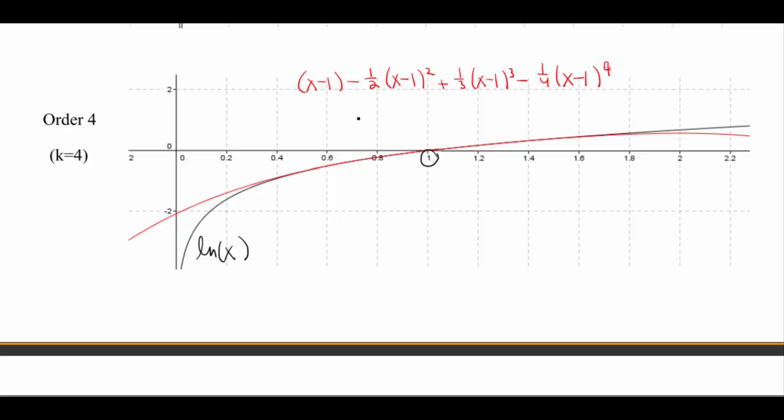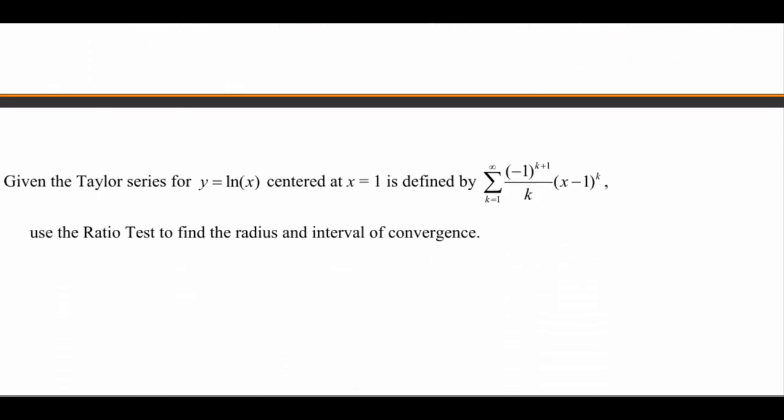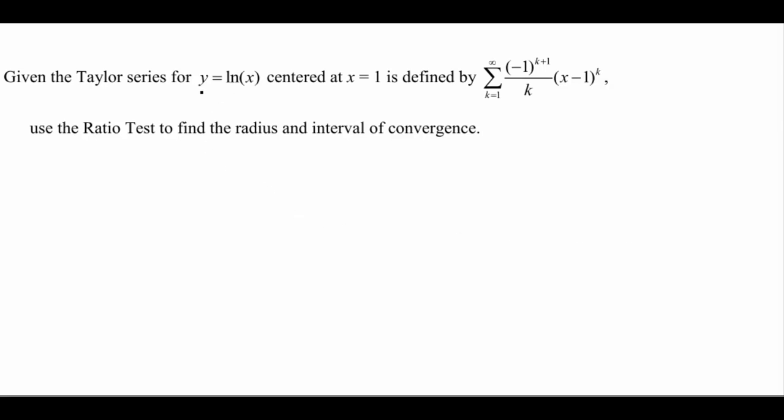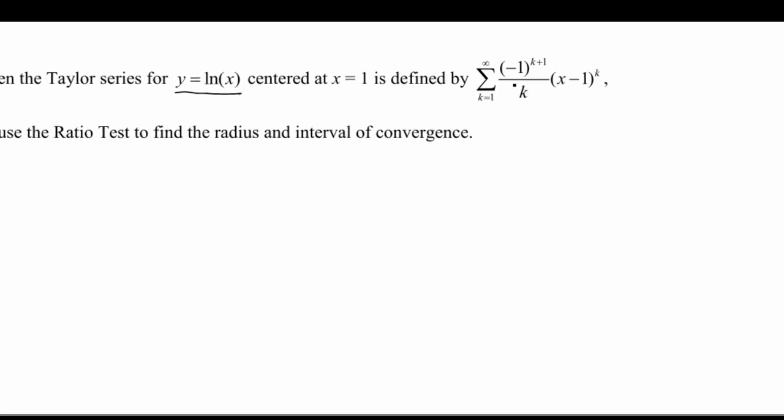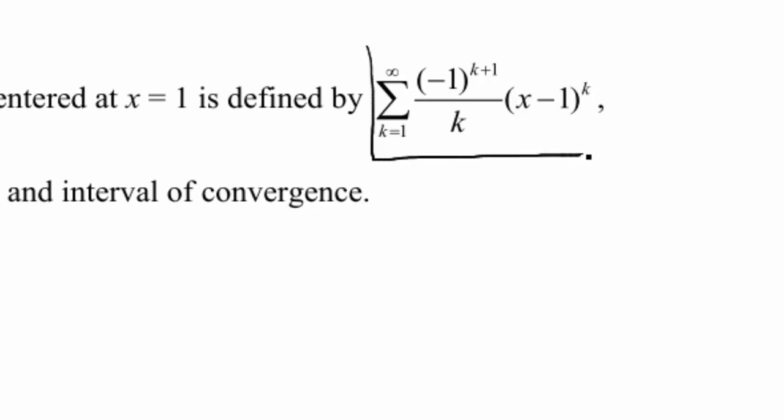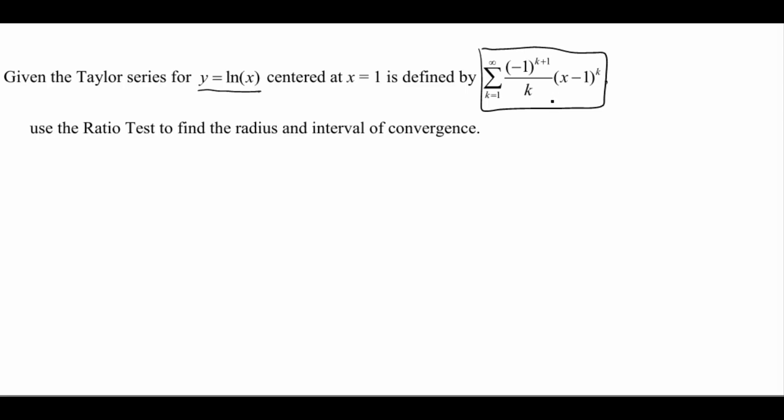So all of this leads us to the natural question: how good is our approximation? How far can we go away from this particular value we're centered at and still have a good approximation, still have convergence? So that leads us to our question. Given the Taylor series for the function we've been working with, natural log of x, centered at x equals 1, defined by what we figured out in the last video. So our series is k goes from 1 to infinity, negative 1 to the k plus 1 divided by k, times x minus 1 to the k. There are lots of k's in there. So that is our Taylor series.